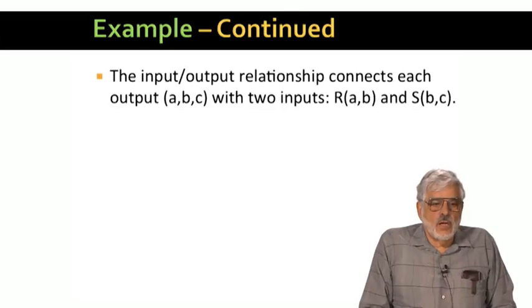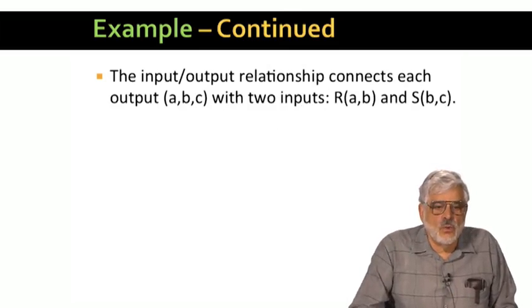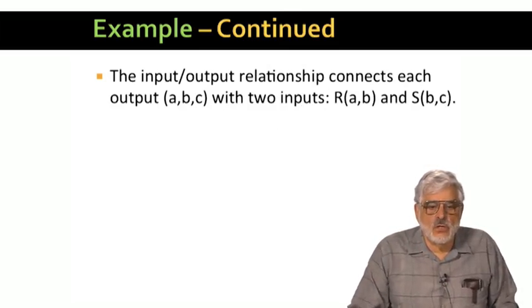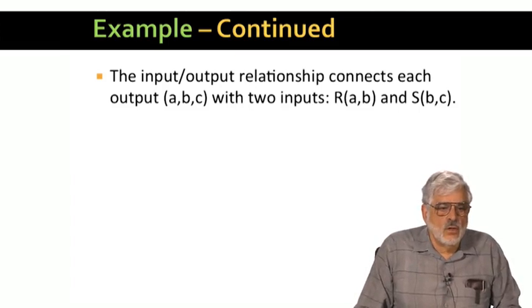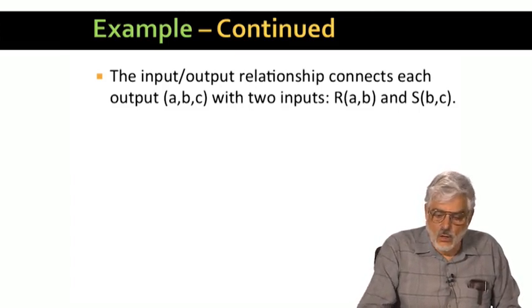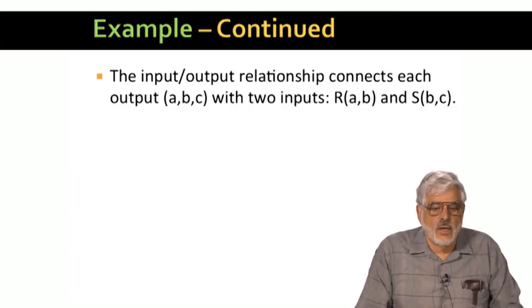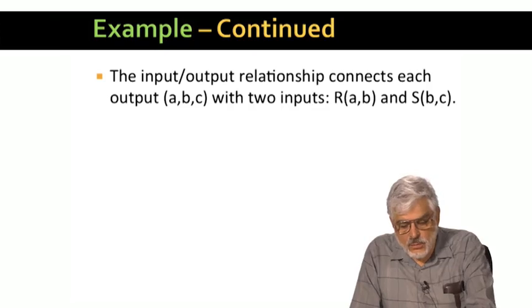In this problem, each output A, B, C is connected to two inputs. The inputs that justify the presence of that output in the join. Those two inputs are R of A, B, and S of B, C.